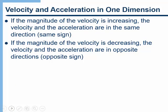To summarize what we've learned: if the magnitude of the velocity is increasing — whether it's increasing in the positive or negative direction — the velocity and the acceleration are going to have the same sign. So moving to the left and speeding up, both a and v have to be negative. Moving to the right and speeding up, both a and v will be positive. On the other hand, if the magnitude of the velocity is decreasing, the acceleration and the velocity will have opposite signs. So moving to the right and slowing down: velocity is positive, acceleration is negative. Moving to the left and slowing down: velocity is negative, acceleration is positive.